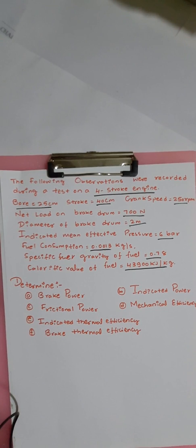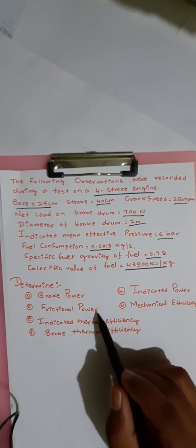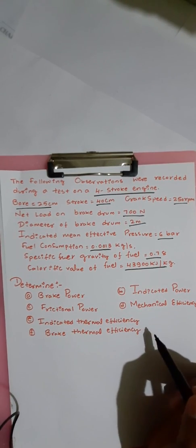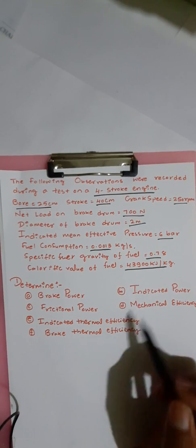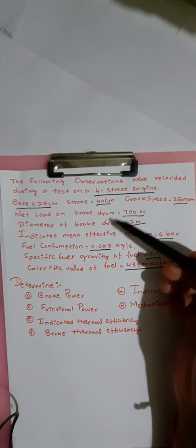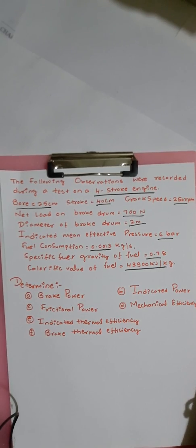The calorific value of the fuel is 43,900 kilojoules per kg. These are the observations recorded during the test on the four stroke engine. Here we need to determine the brake power, indicated power, frictional power, mechanical efficiency, indicated thermal efficiency, and brake thermal efficiency.